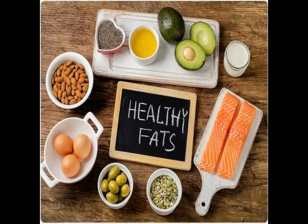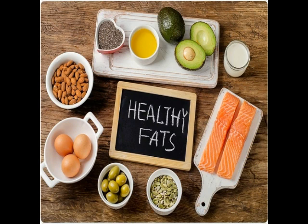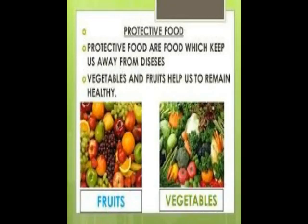Fats are instant energy givers because they provide energy very quickly, and they are also required by our body, especially by children. Sources of fats include oil, ghee, butter, meat, and fatty fish. So carbohydrates, proteins, and fats make up calorigenic food — they provide energy and build up our muscles.